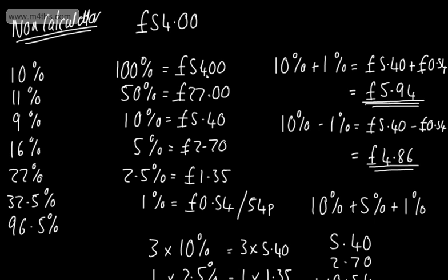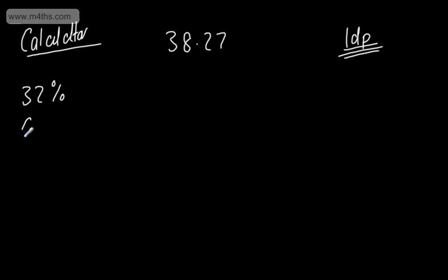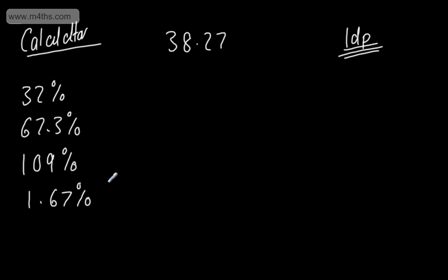Let's now go on to some calculator questions. I'm going to use a trickier number: 38.27, and I'll give all answers to one decimal place. You will be given a level of accuracy. The percentages we'll find are: 32%, 67.3%, 109%, and 1.67%.